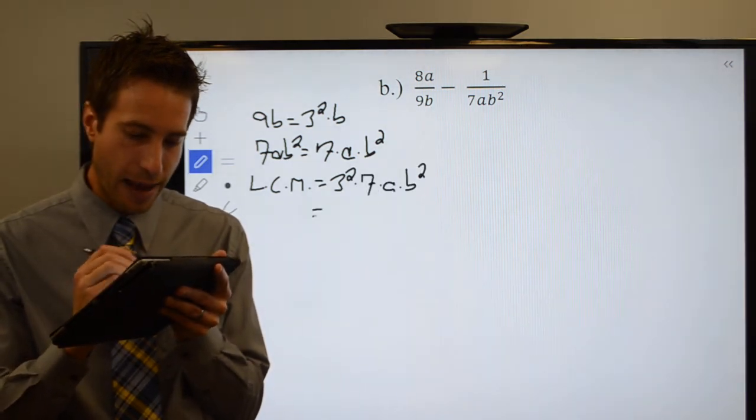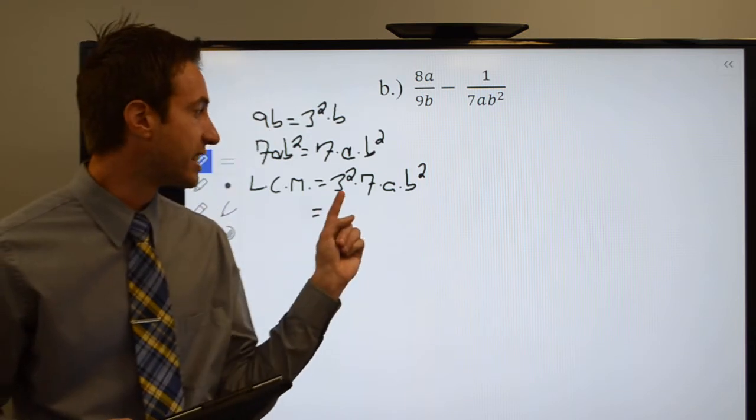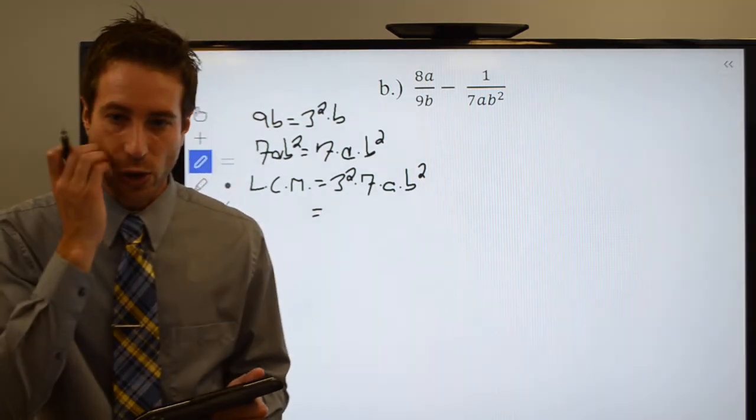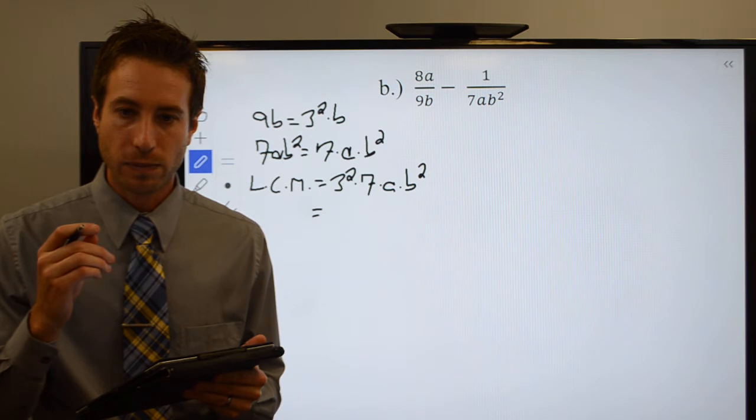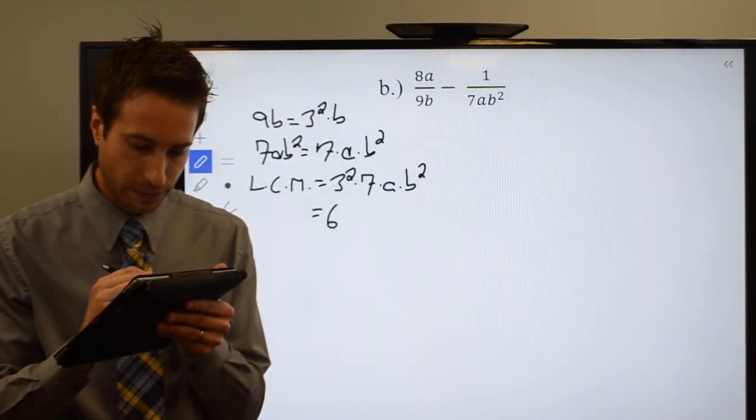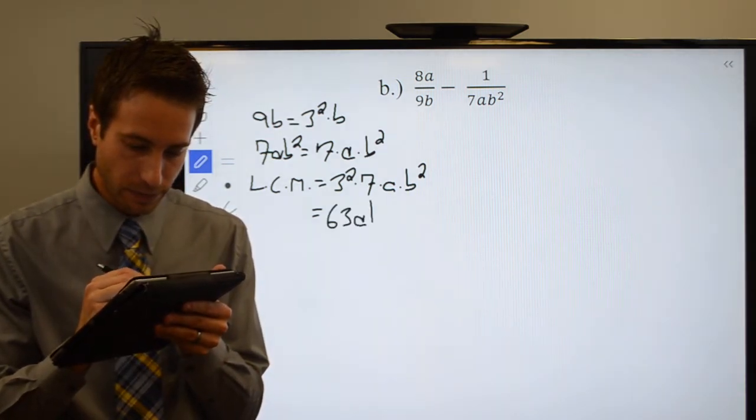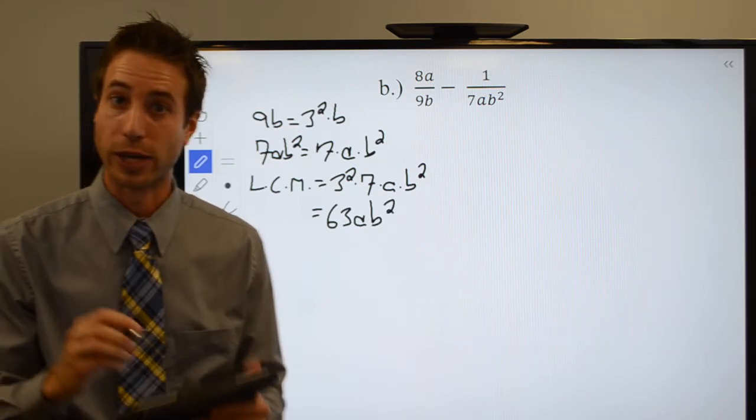So that means 3 squared is 9, 9 times 7 is going to be 63. Alright, here we go.